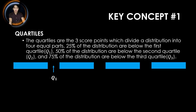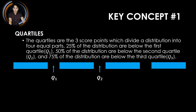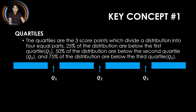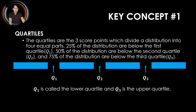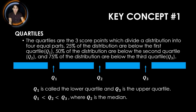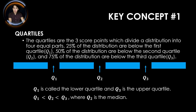Between the second and third blocks is the second quartile, representing 50% of the distribution. Between the third and fourth blocks is the third quartile, representing 75%. The first quartile is called the lower quartile, and the third quartile is called the upper quartile. The first quartile is less than the second quartile, which is less than the third quartile, where the second quartile is what we call the median — or the middle value.